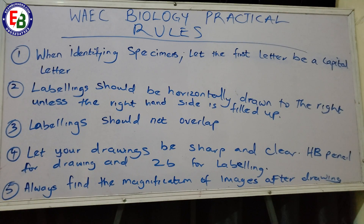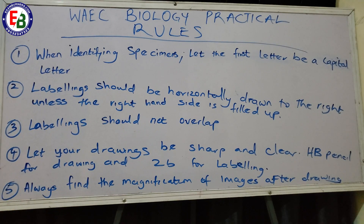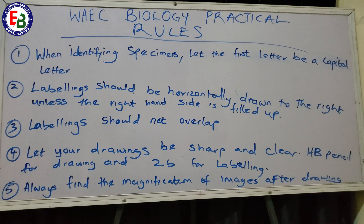Rule number three: your labeling lines should not overlap. Don't let the horizontal lines cross one another. If a label is at the bottom, draw it horizontally downward; if it is at the top, draw it horizontally upward. Never let one labeling line cross another. Any such mistake will result in a subtraction of marks — half a mark or one mark — and those small marks add up as part of your 40 practical marks.